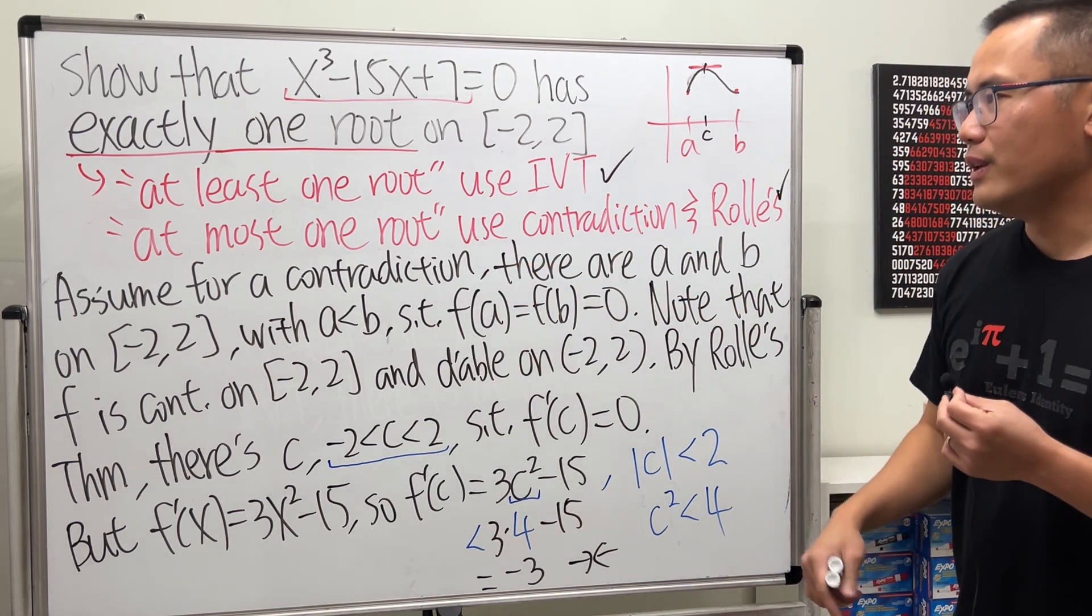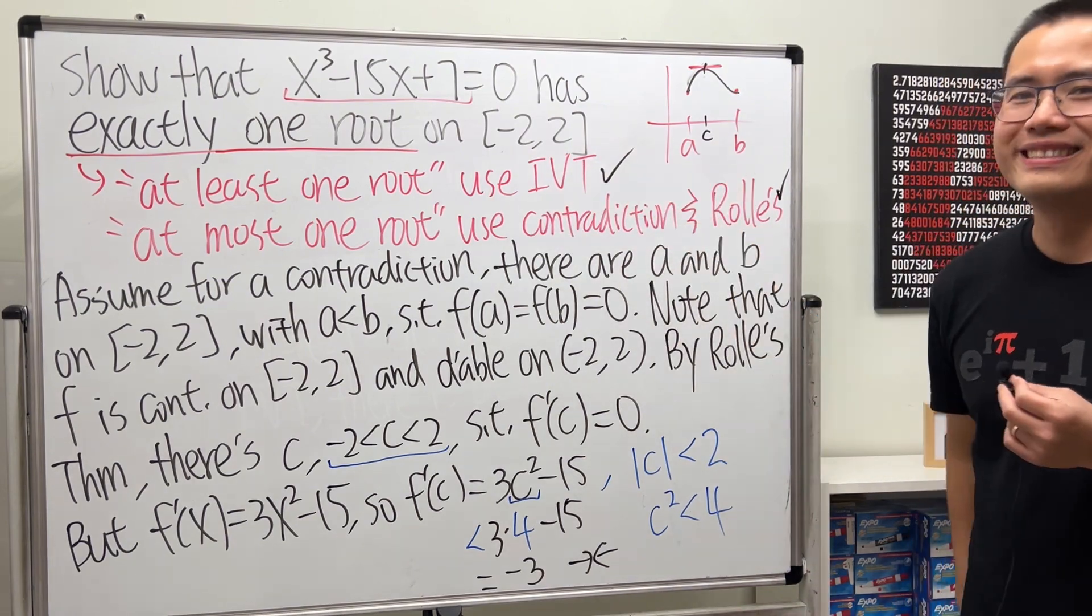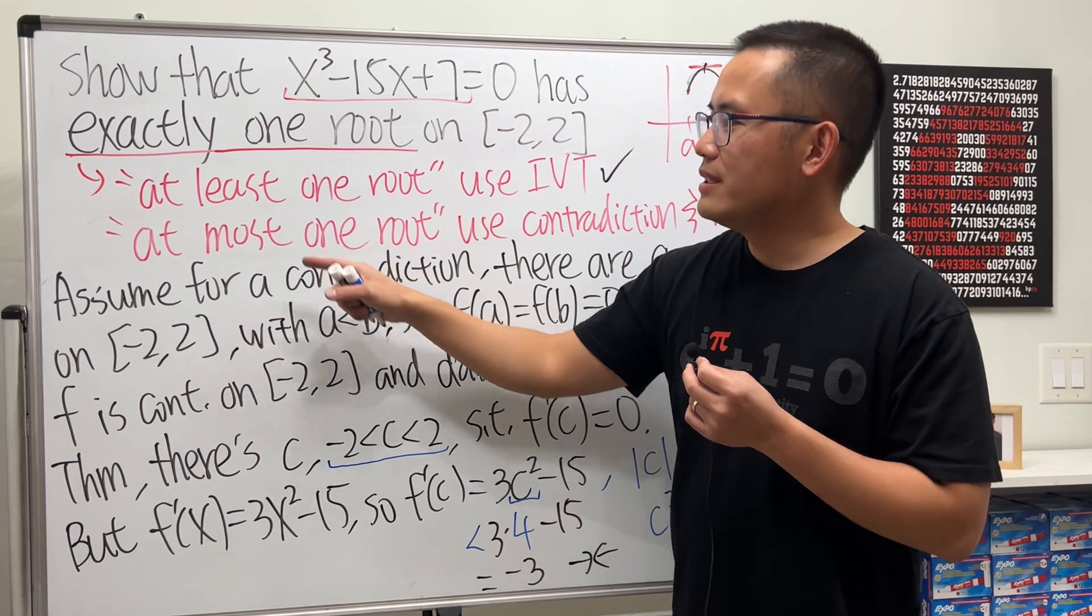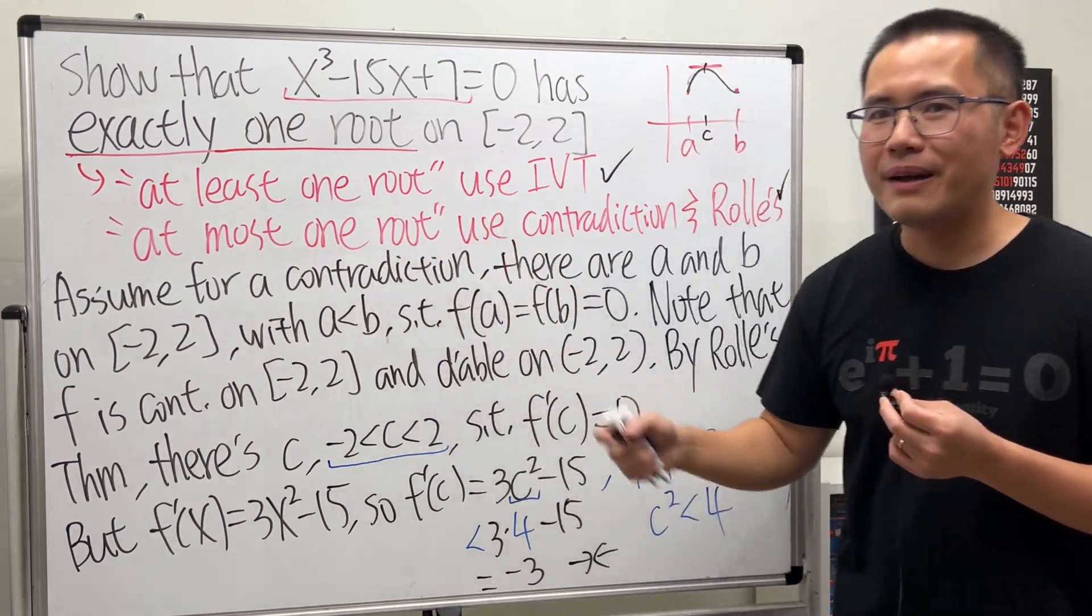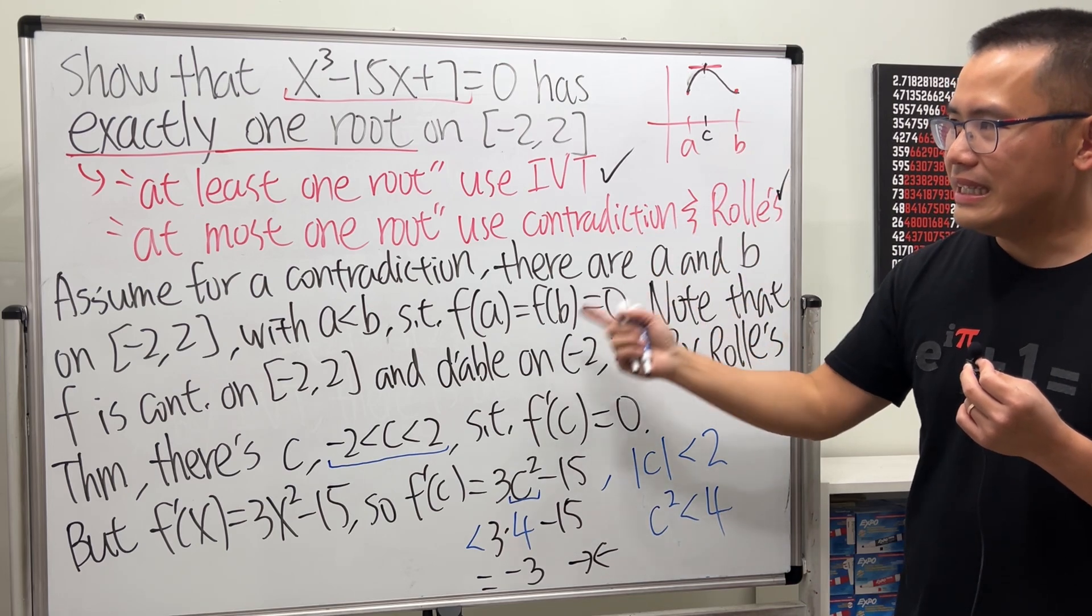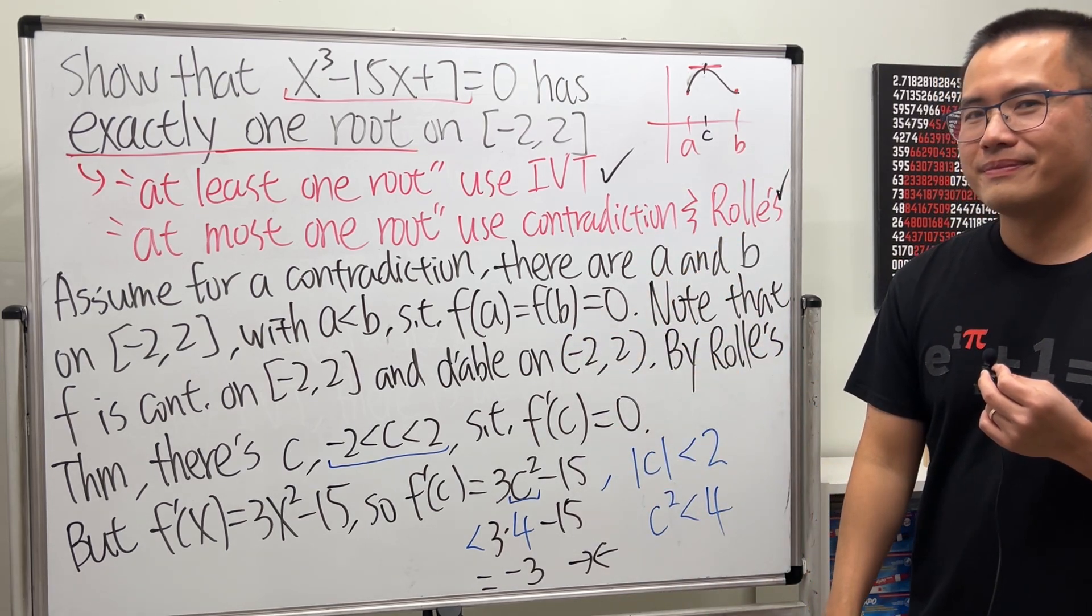Like this. And finally, once you do this part and that part, when you have an equation that has at least one root and also at most one root at the same time, you can just say that hey, it must be having exactly one root. And that's it.